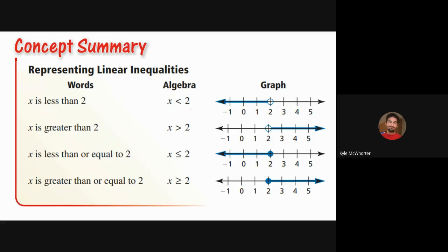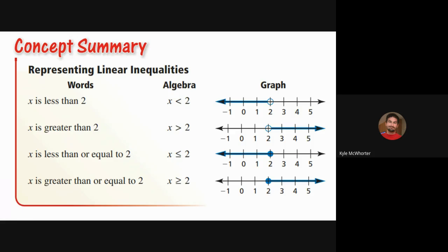We also learned that if you have an equal-to sign with your inequality, you use a solid closed circle on the graph. If you don't have an equal-to sign, you use an open circle. And we learned not to say 'greater than or less than' — that would just be a not-equal-to symbol, which looks a bit like an anime face or a text heart.